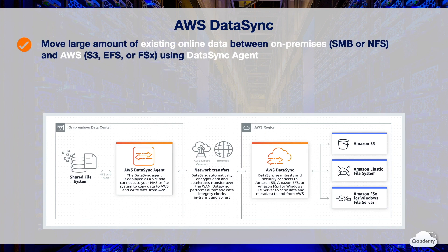DataSync makes it simple and fast to move large amounts of existing online data between on-premises SMB or NFS storage, and Amazon S3, EFS, or Amazon FSx for Windows File Server. You deploy the DataSync agent to on-premises servers or AWS. The agent connects to source storage and seamlessly moves data to the destination storage.